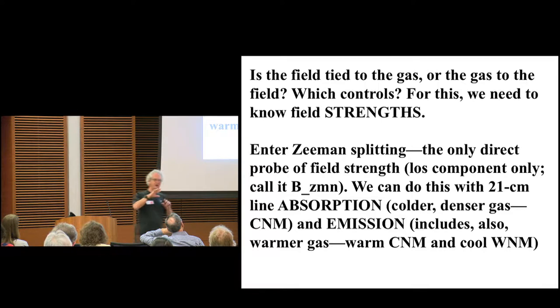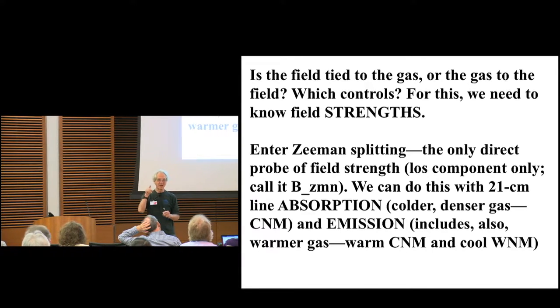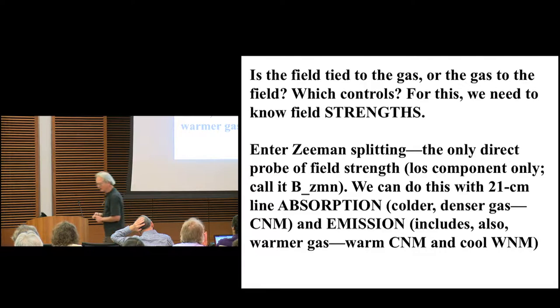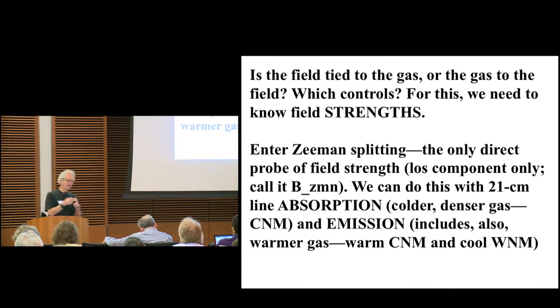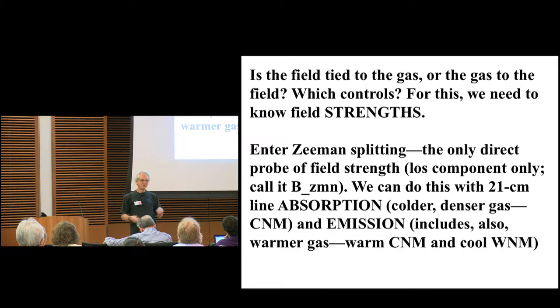When you look at the morphology of the neutral gas and compare it with the morphology of the starlight polarization, which outlines the perpendicular component of magnetic field on the sky, there's a remarkable correlation. We see this morphological connection, but is it the gas that's connected to the field, or is it the field that's connected to the gas? And the way to answer that is to determine how strong the field is compared to the gas pressure.